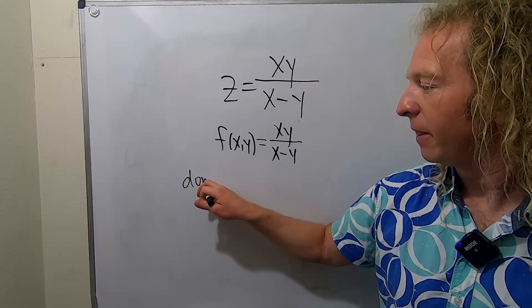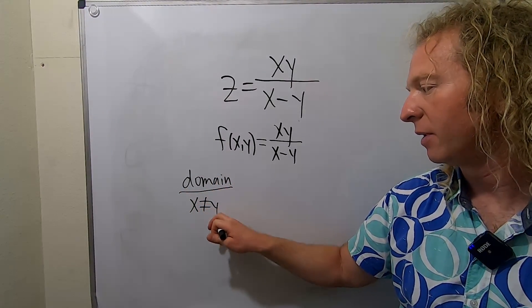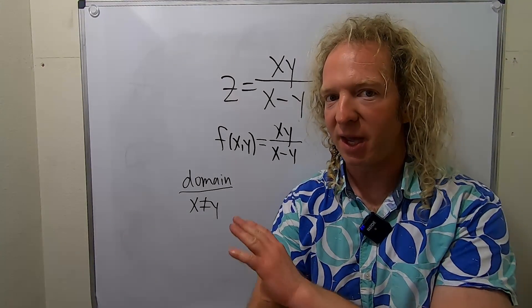So for the domain, the main condition that we need to consider is that x is not equal to y. Because if x is equal to y, then we're dividing by 0, and that's no good.